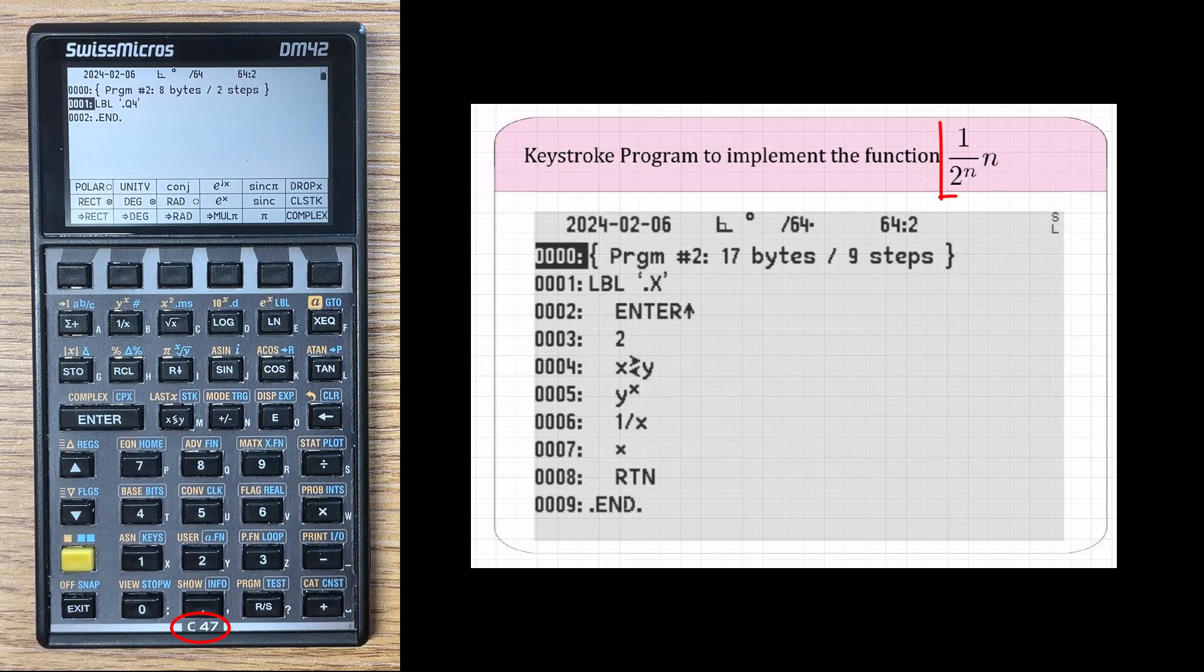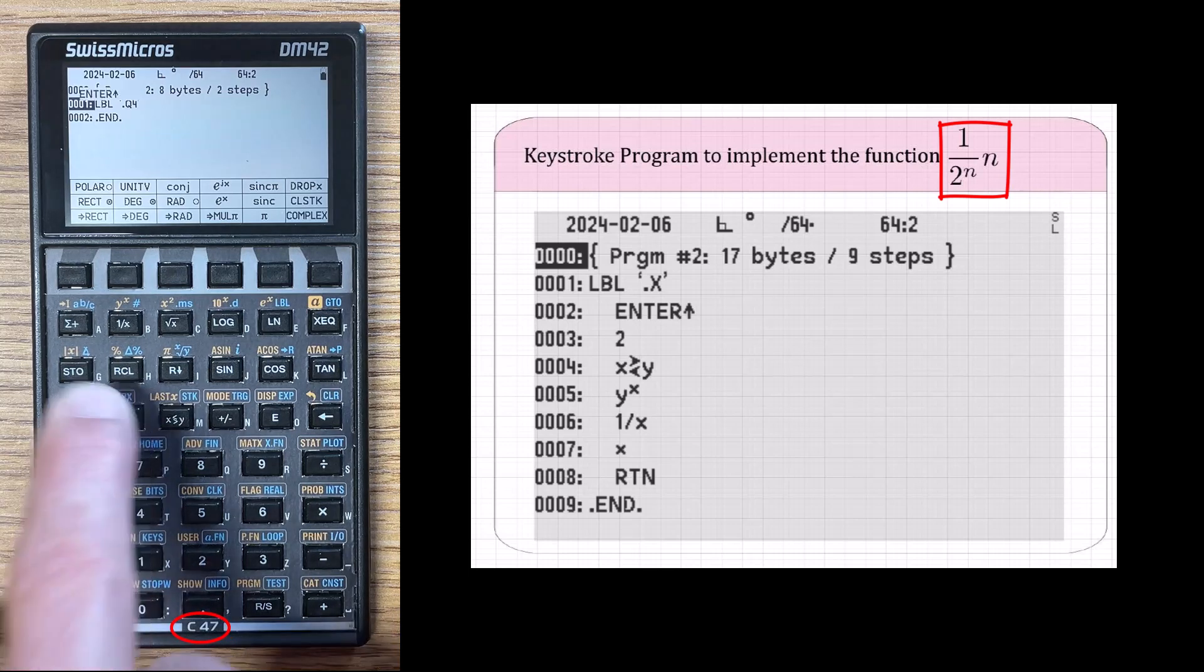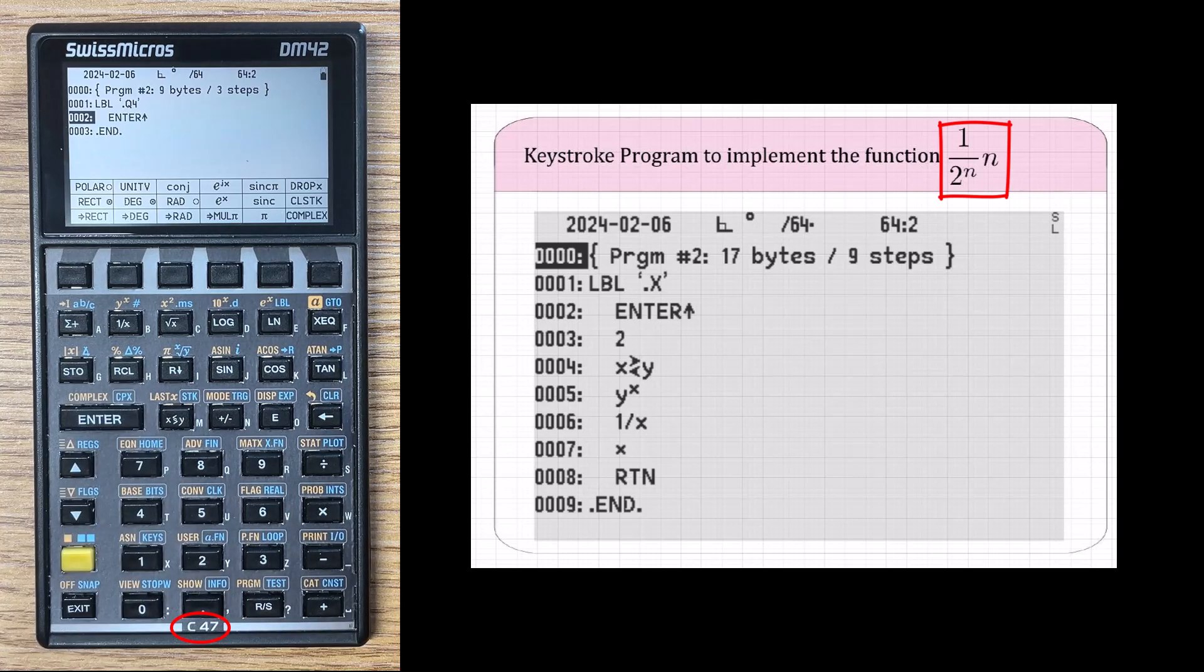Now I need to program this function. So for this function, it's one over two raised to the N and that whole quantity times N. I noticed right away that I'm going to need two N's to do this calculation. And the calling function is going to pass me the value of N on the stack. So I could store N and then recall it, or I could just press enter in my program, which would copy N into the Y position of the stack as well as keep a copy on the X position. So I'm doing that. Now I have two N's on the stack.